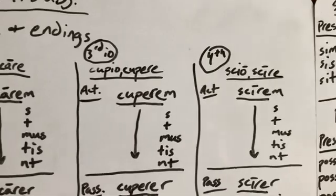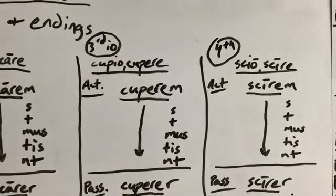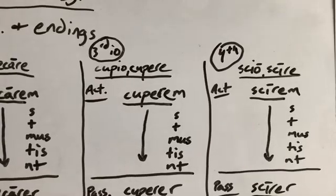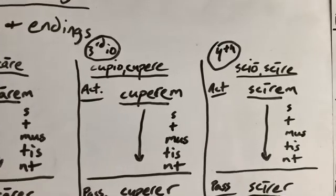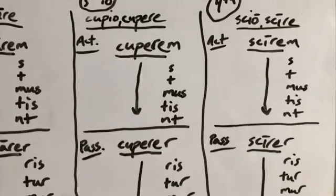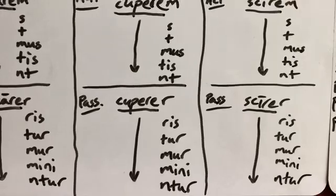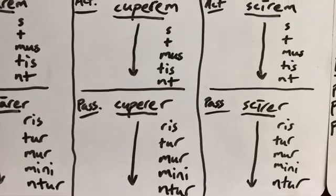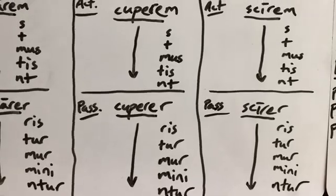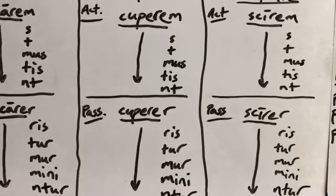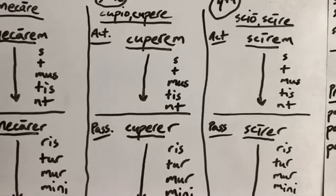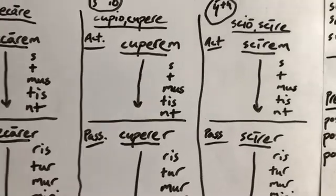I gave you a couple other verbs here. Here's a third IO — you do the exact same thing: take that infinitive, put your endings on it. There's a fourth conjugation — take your infinitive, put your endings on it. Same thing for passive. And the great thing, too, this works the same way for irregular verbs as well. It's a pretty great form, very easy to make. Just take the second principal part and put your endings on.